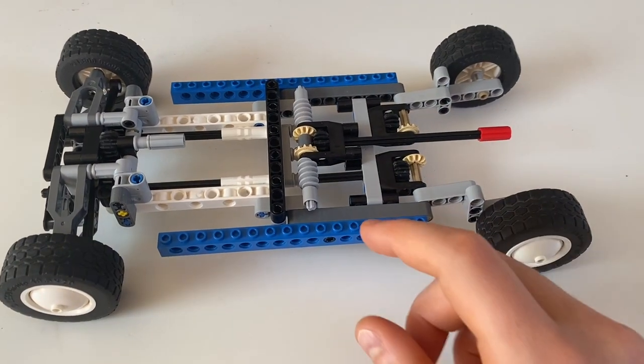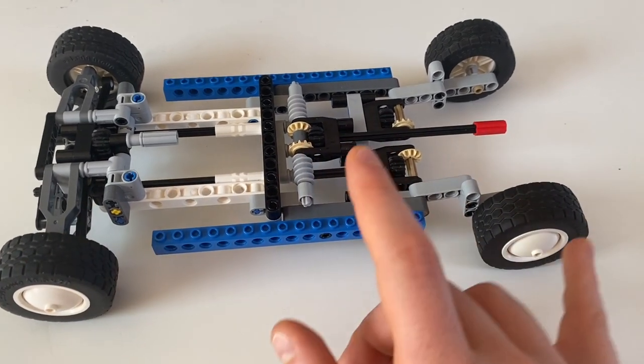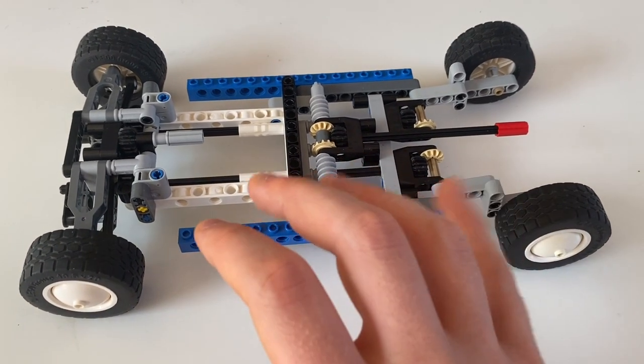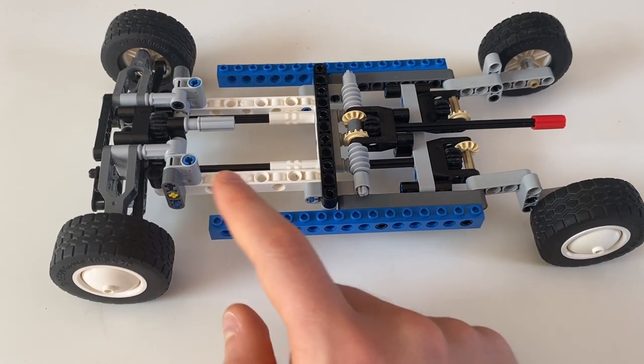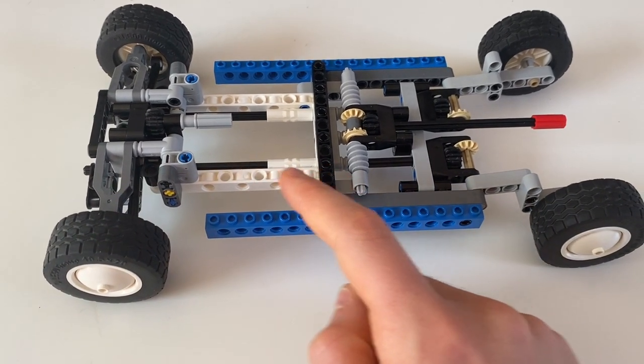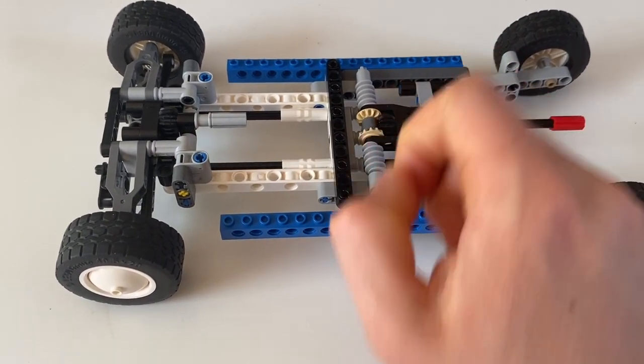The second challenge is getting the front and rear suspension to both be at the correct stiffness, because the stiffness is purely determined by the length of the torsion beam before it is set in place somewhere and stopped from rotating.